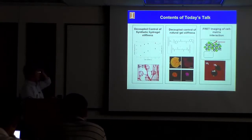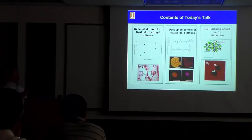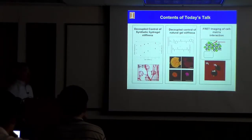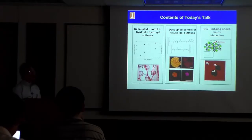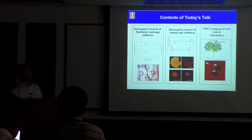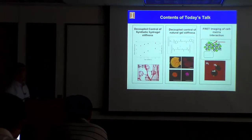In today's talk, I'm going to show three different topics. First, I'll show how we can control several properties of a synthetic hydrogel system formed by synthetic polymers and use that for vascularization. Second, I'll show how we can control properties of a gel formed by physical association between collagen fibers and use that for 3D cancer cell culture, especially to understand how mechanical stiffness influences cancer cell malignancy. Third, I'll show how we can interrogate the interaction between cell and extracellular matrix using the FRET technique.